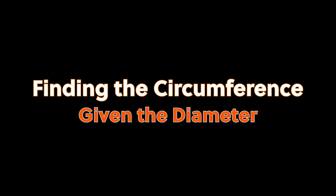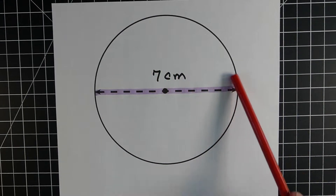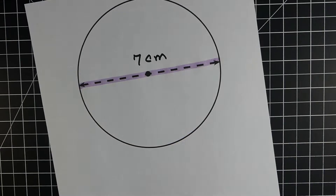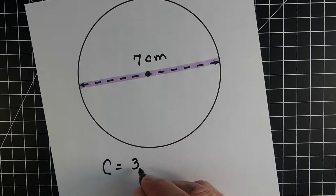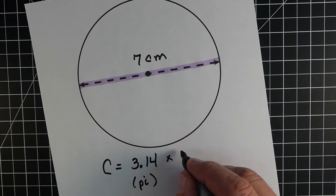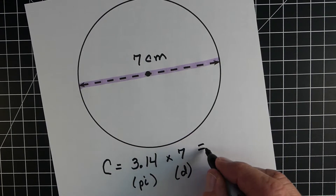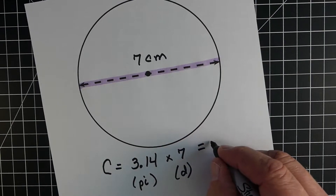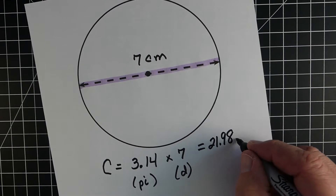Let's look at a couple of examples. First, if we're given the diameter, this problem has a diameter of 7 centimeters and we want to find the distance around. The distance around is always about three times bigger than the diameter. So circumference equals 3.14 times the diameter, which is 7. So 3.14 times 7 gives us 21.98 centimeters.